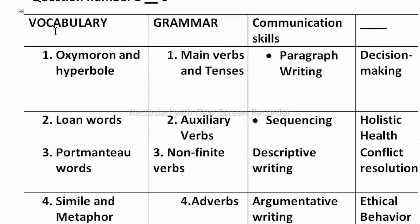In Unit 1 you will be having vocabulary — that is oxymoron and hyperbole. I have already uploaded the video on oxymoron and hyperbole; the link is provided in the description box of this video. In the grammar section you will be having main verbs and tenses, which I have also uploaded. In communication skills, paragraph writing and decision making will be there. If you learn these vocabulary and grammar topics, you can easily score in your exam.